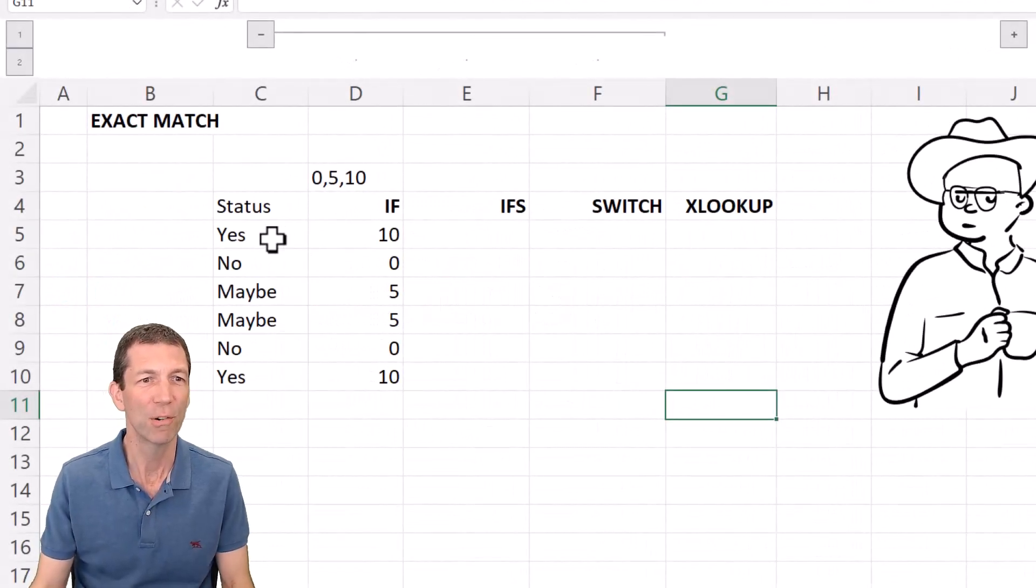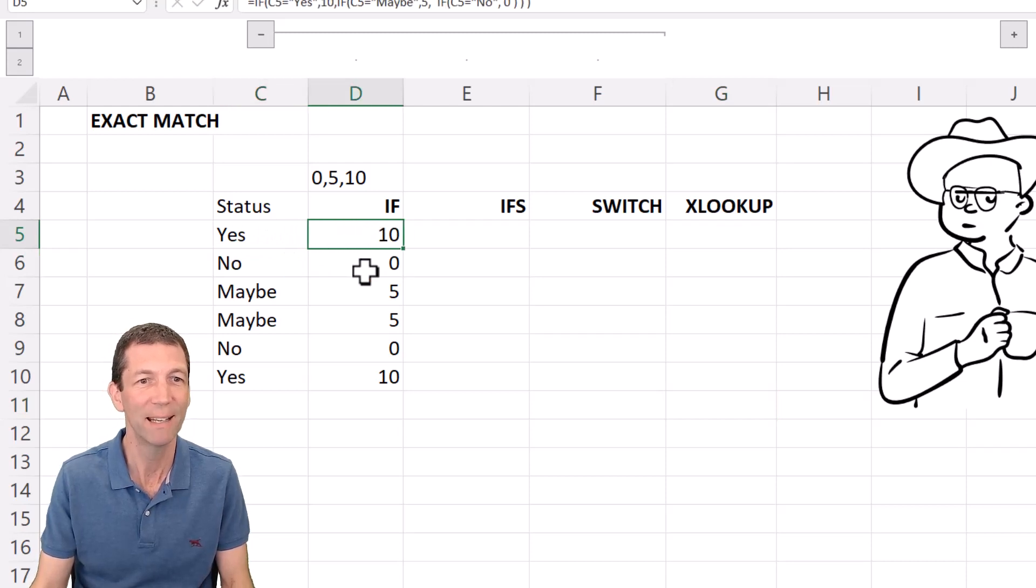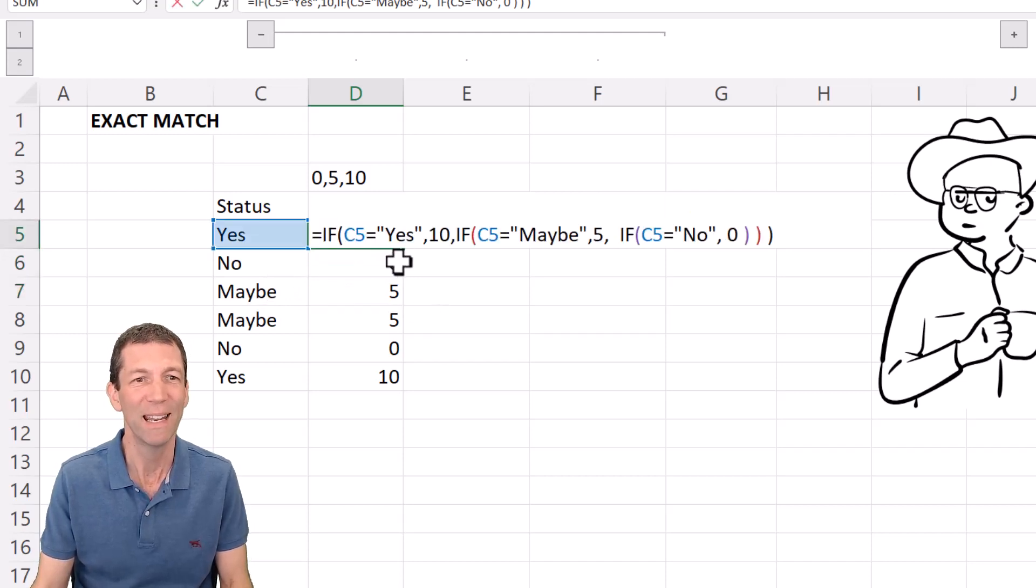Okay I've got an example here where if the status is yes I want to give a result of 10, if it's no I want a zero, and if it's a maybe I want five. I've set this up with an if, so if c5 equals yes then 10, if c5 equals maybe then 5, and so on with all the brackets on the end. It's not ideal, it's a big horrible formula.